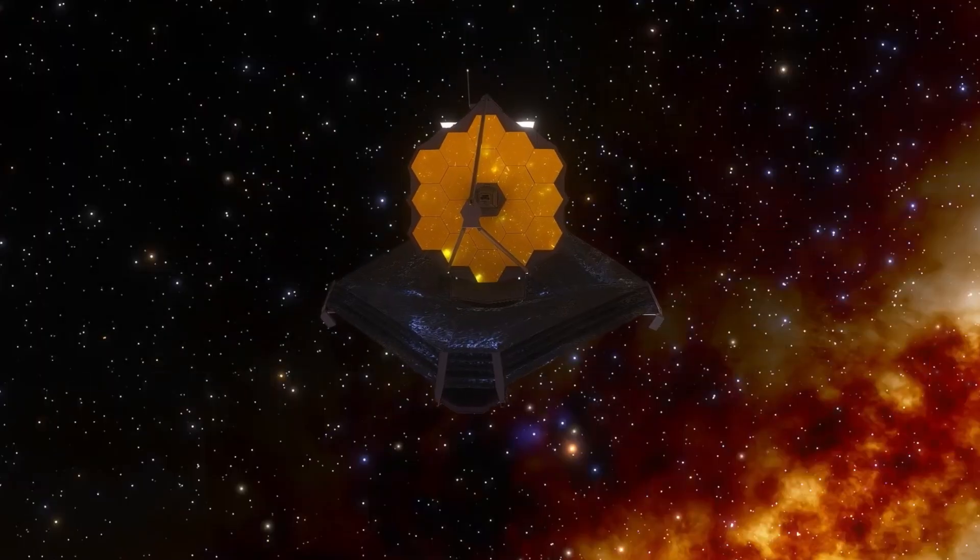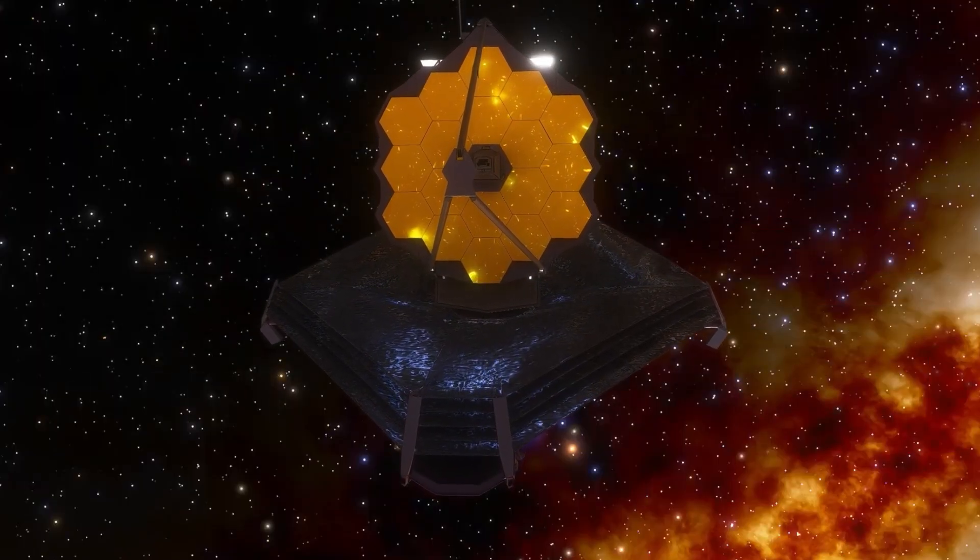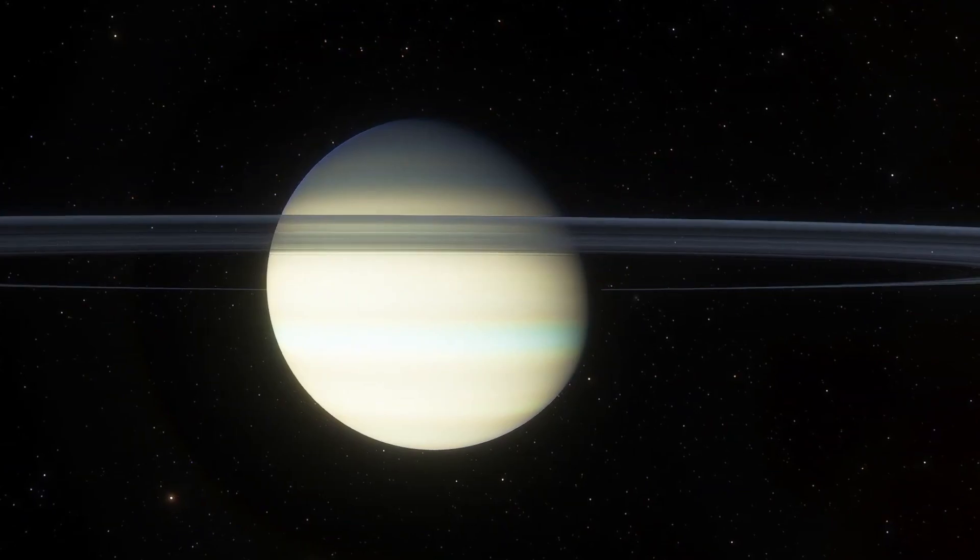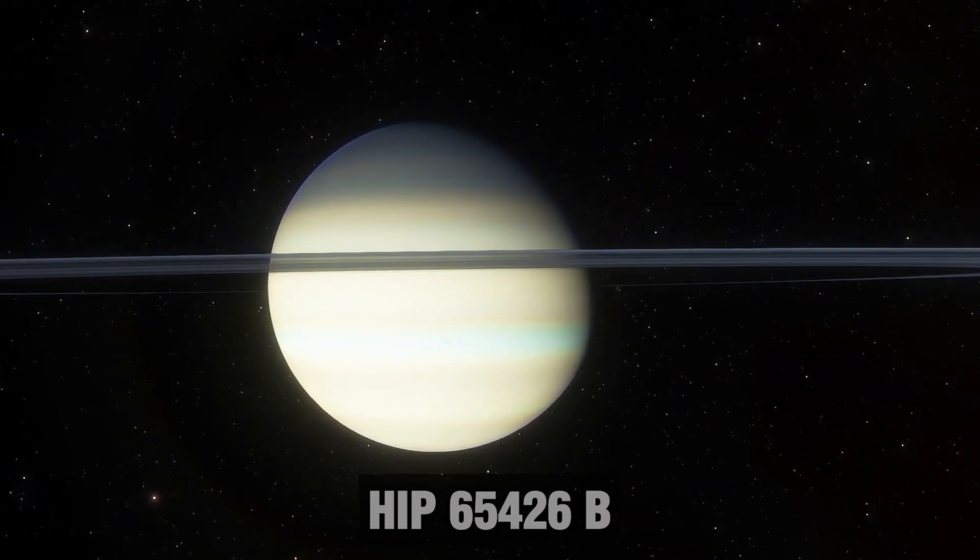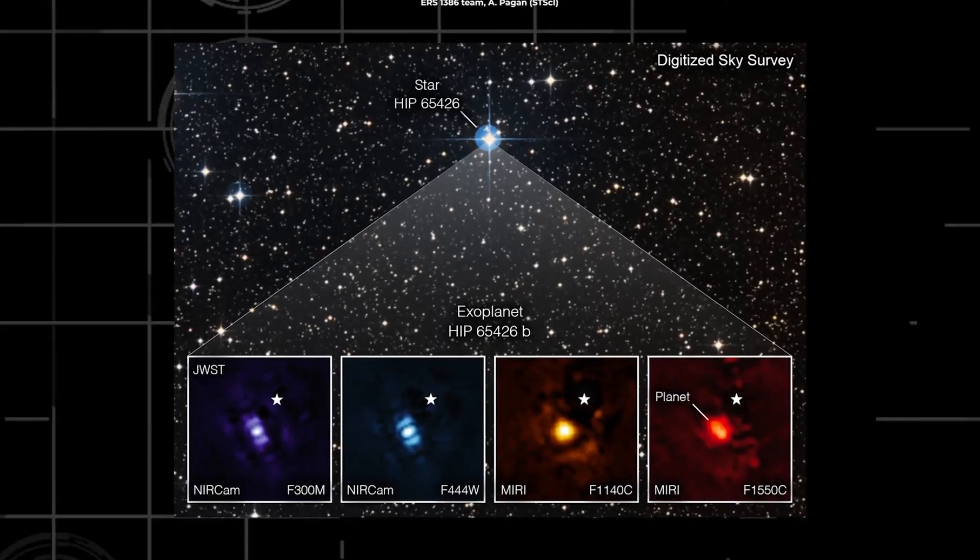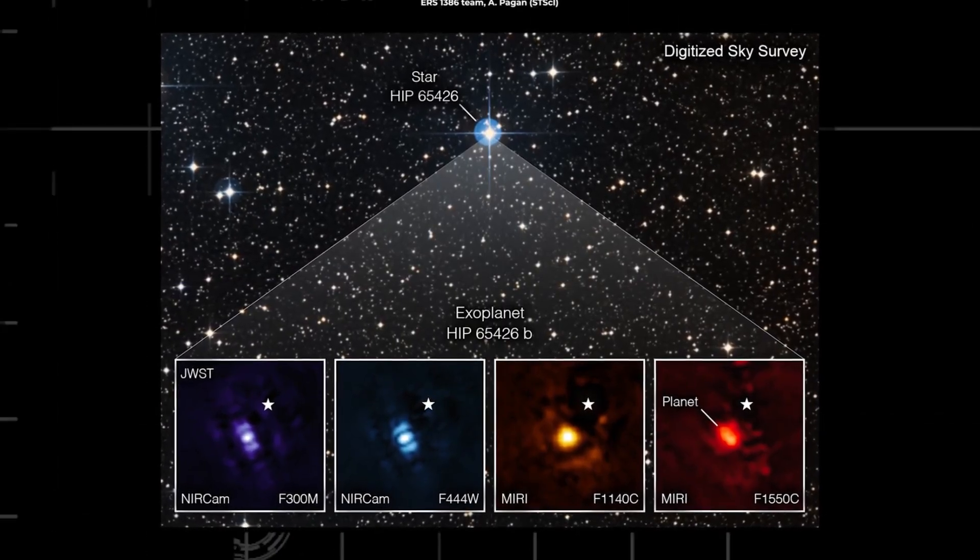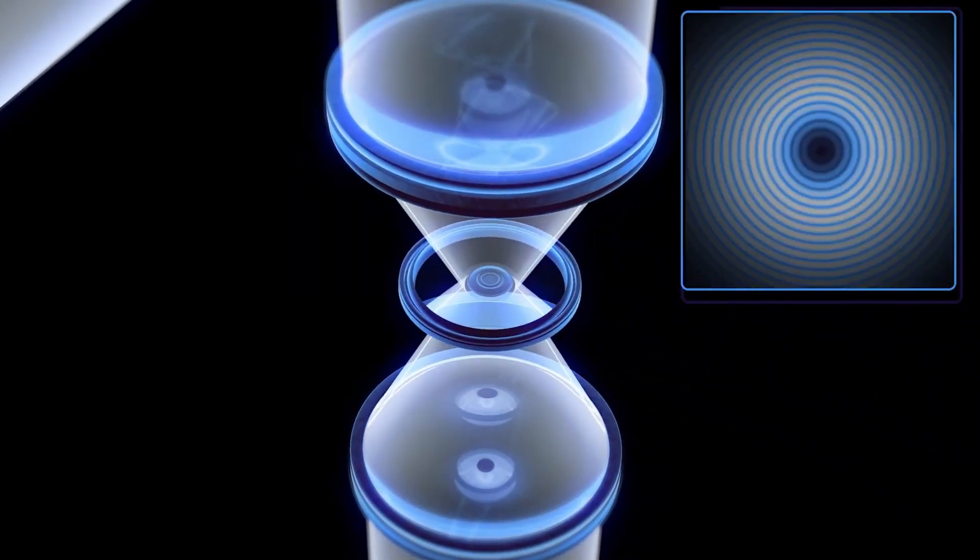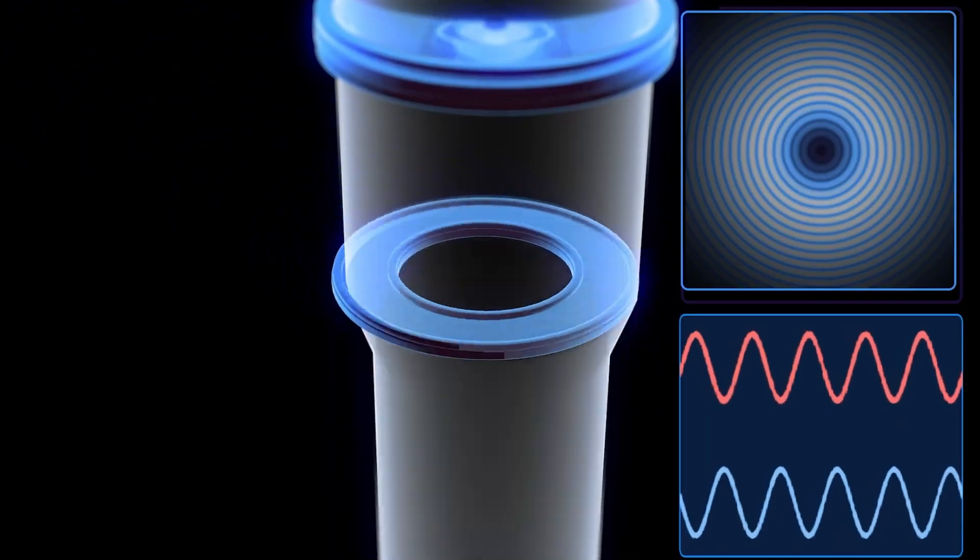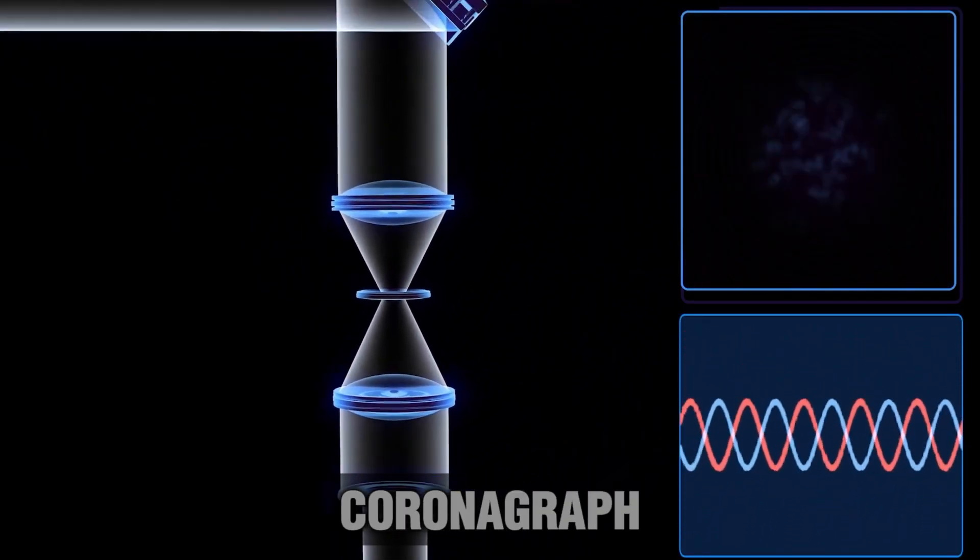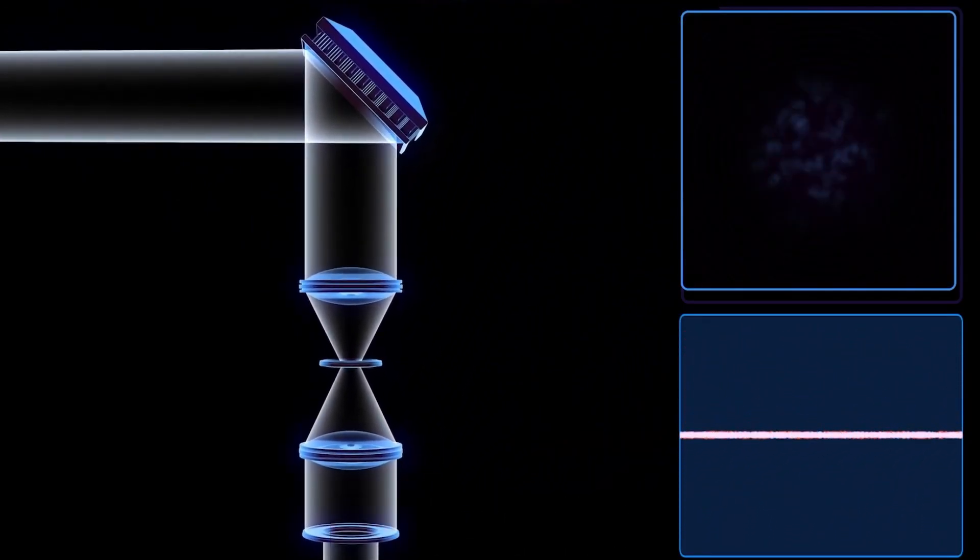In September, the Webb Telescope took its first-ever picture of a faraway planet called HIP 65426 b. Scientists found this planet back in 2017. To snap a picture of it, they used two cameras on Webb, some special filters, and something called a coronagraph, which blocks out the bright light from the star at the center.